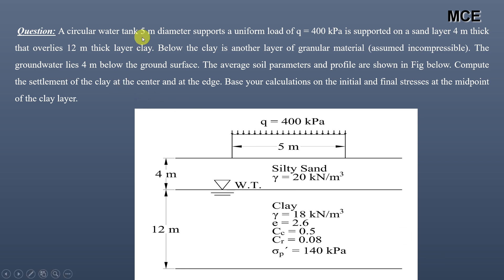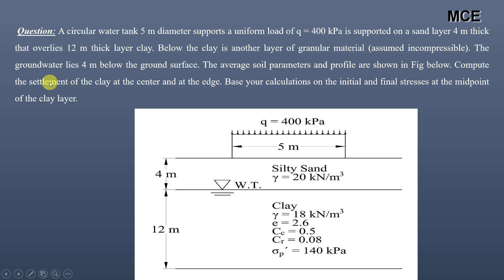A circular water tank 5 meters in diameter supports a uniform load of 400 kilo Pascal. It is supported on a sand layer 4 meters thick that overlies a 12-meter thick clay layer. Below the clay is another layer of granular material assumed as incompressible. The groundwater table lies 4 meters below the ground surface. We have to compute the settlement of the clay at the center and at the edge.